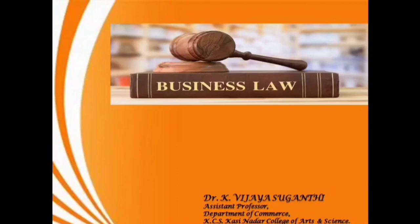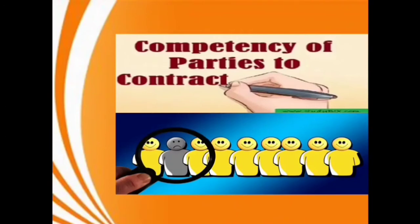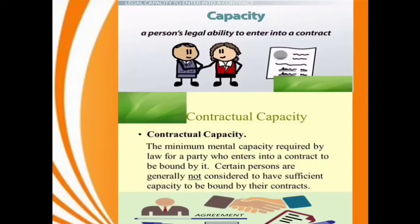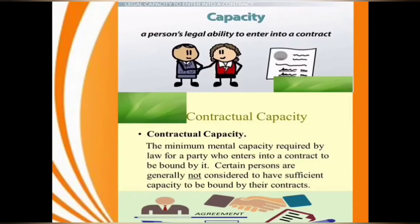In this video, I am going to explain about capacity to contract. To enter into a contract, an individual must have mental capacity sufficient to understand the nature and consequences of actions. Capacity to contract means the legal competence of a person to enter into a valid contract and the competence to perform some act.